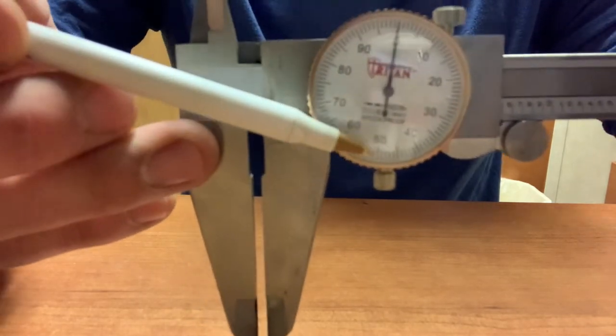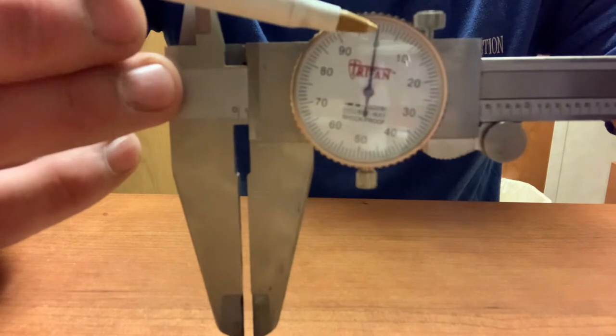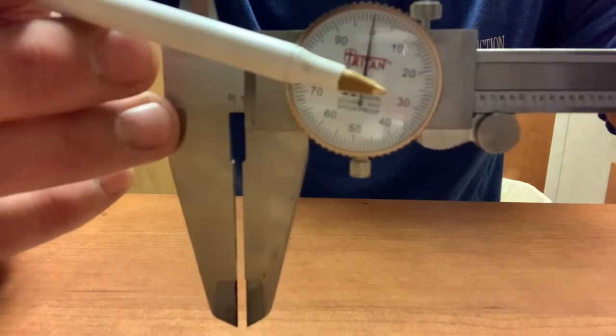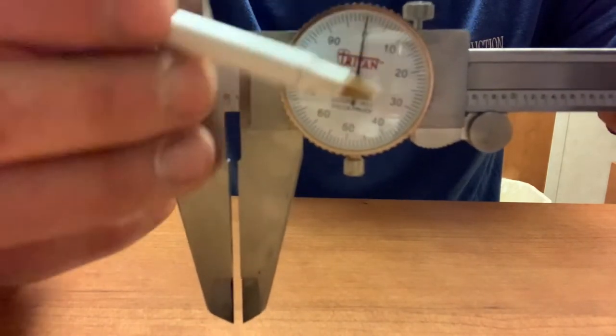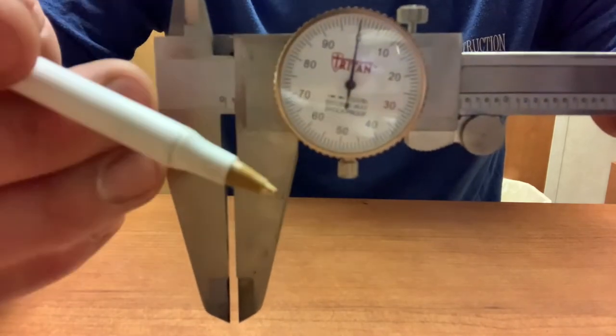So 10, 20, 30, 40, 50, 60, 90, 100. So this is dividing a tenth of an inch into a hundred parts, making it a thousandth of an inch.